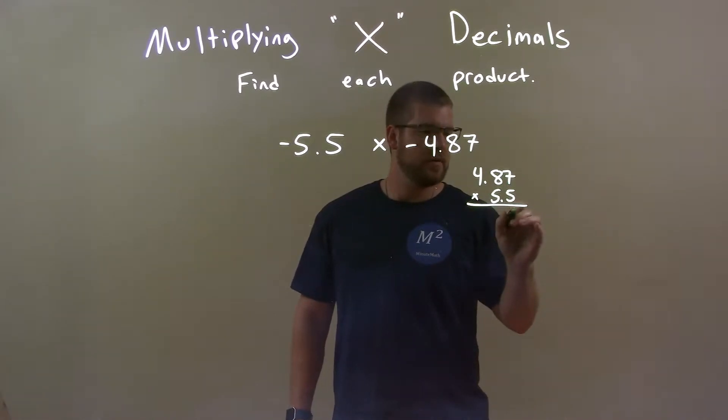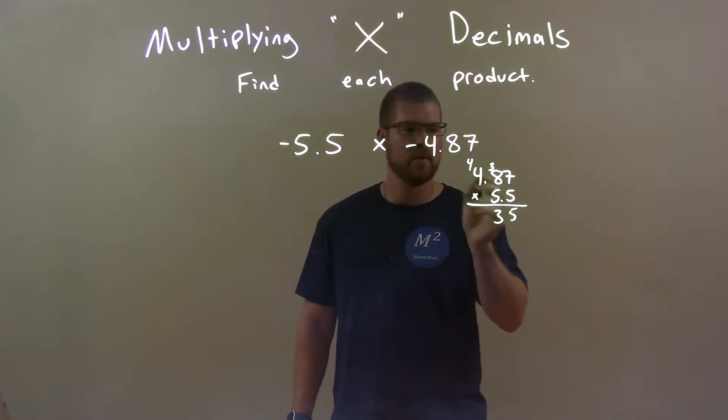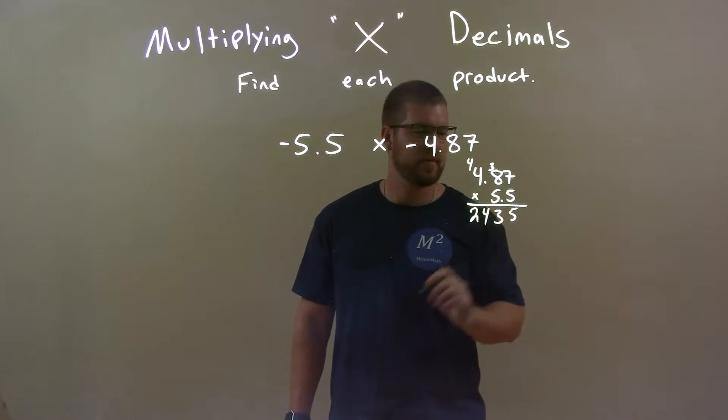5 times 7 is 35, so we have 5 here, carry the 3. 5 times 8 is 40 plus 3 is 43. 3 carry the 4. 5 times 4 is 20, plus that 4 is 24.